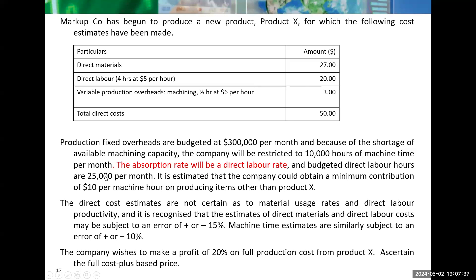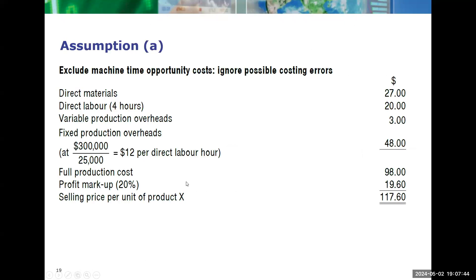The budgeted direct labor hours are 25,000 hours per month, so we use those two numbers. $300,000 fixed overheads divided by 25,000 labor hours gives $12 per labor hour. Because this product requires four labor hours, $12 times four labor hours is $48 attributed towards fixed overheads for this product. So these are the variable costs, these are the fixed costs, giving a full cost per unit of $98. Then you add a profit markup of 20% to come to the selling price. This is the simplest cost-plus approach.